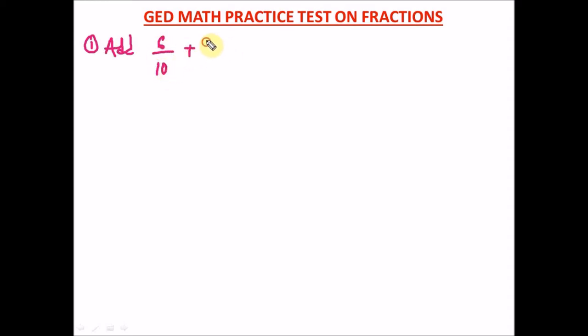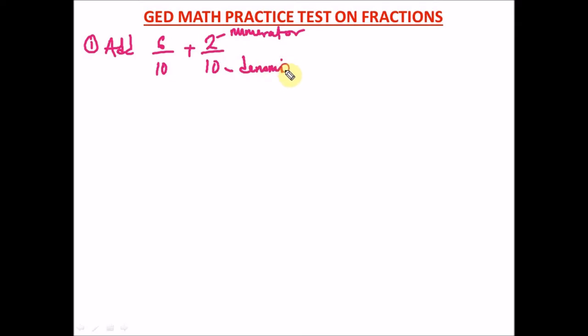Question one: add 6 over 10 plus 2 over 10. When you have something like this, it's quite easy. In fractions, the upper number is called the numerator and the lower number is called the denominator.